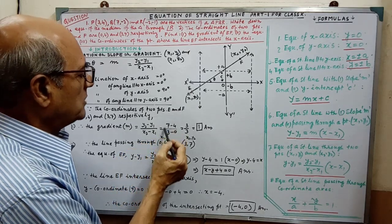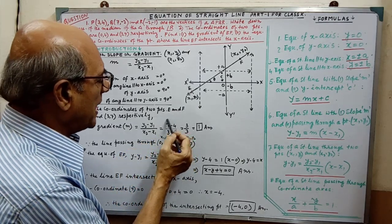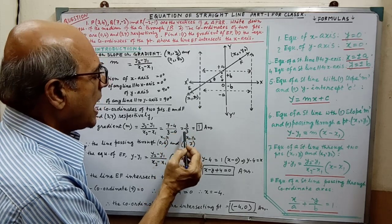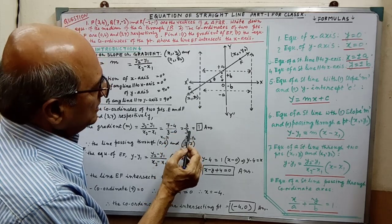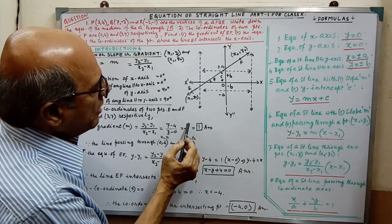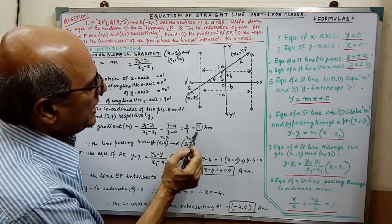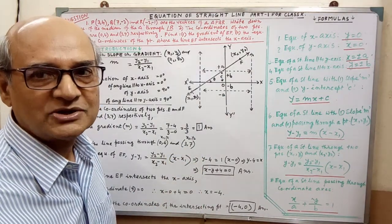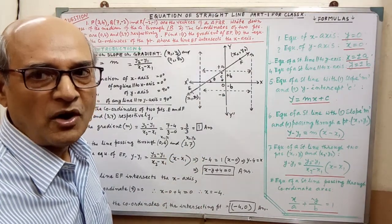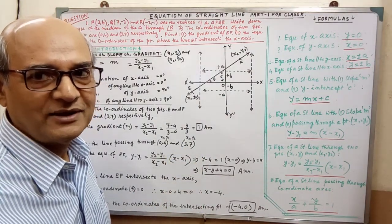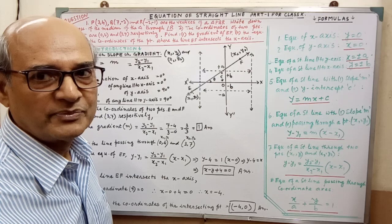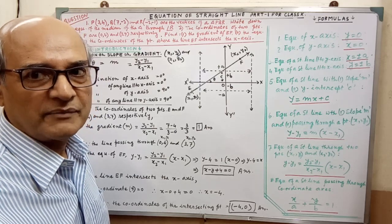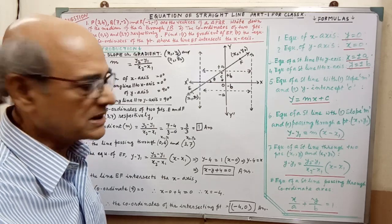After putting in the relevant values and simplifying, the result is 1. So the slope, or gradient, of this line is 1. The answer for the first part is completed.